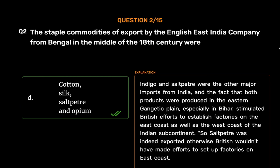Indigo and saltpeter were the other major imports from India, and the fact that both products were produced in the eastern Gangetic Plain, especially in Bihar, stimulated British efforts to establish factories on the east coast as well as the west coast of the Indian subcontinent. So saltpeter was indeed exported, otherwise the British wouldn't have made efforts to set up factories on the east coast.